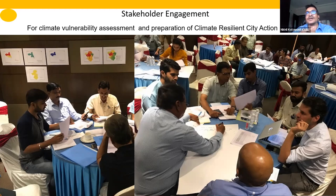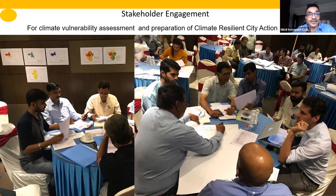Stakeholders are typically engaged through two to three larger workshops. In the first workshop, they are informed that the city is keen to initiate climate action planning, and inputs are taken at various stages — from baseline assessment through to identifying possible actions. This helps get stakeholder buy-in from the beginning. The success depends on stakeholders adopting these actions and, in the local context, how ready people are — for example, to take public transport or accept pedestrianization in certain areas.